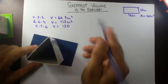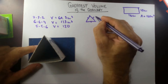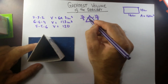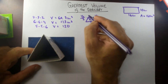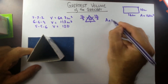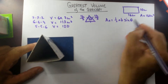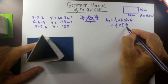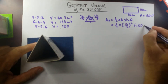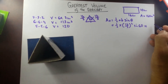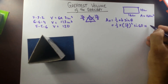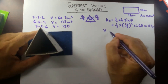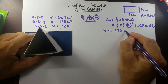But in this case, if all sides are equal, this is an equilateral triangle, so each side is 16 divided by 3. Since an equilateral triangle has 60-degree angles, the area of the triangle is half A times B times sin theta. Here A and B are the same, so we calculate (16/3)² times sin 60, giving an area of approximately 12.3 square cm. So the volume of this triangular prism is approximately 123 cubic cm.